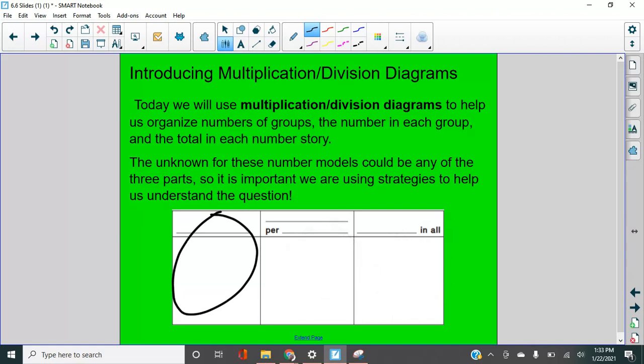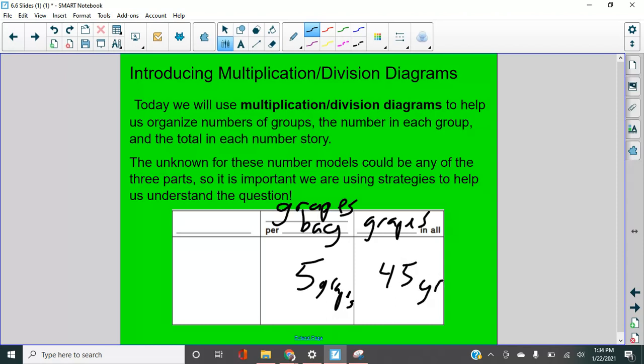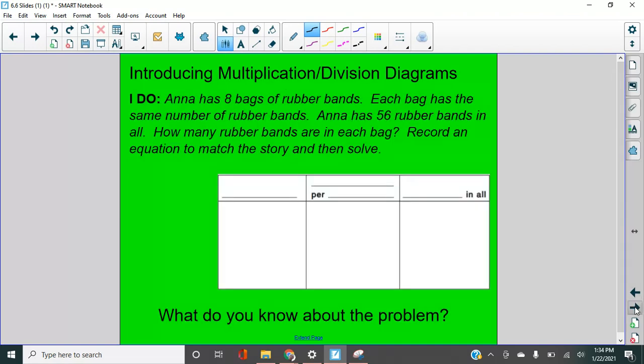So for example, on our first problem, we didn't know how many bags there were. Okay. We did know that there were how many grapes per bag. And we did know how many grapes there are, right? So we knew that there were five grapes in each bag. And there were 45 grapes. Okay. And so our question mark was here with how many bags that will not always be where the question mark is. So you're going to have to be careful readers in order to figure this out.